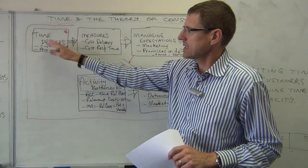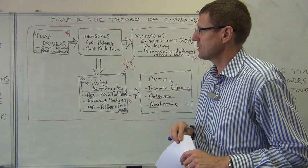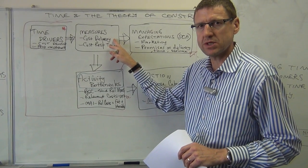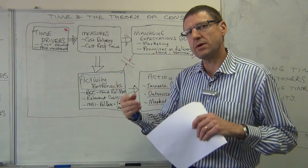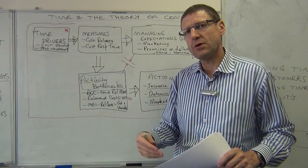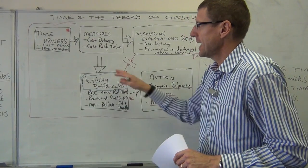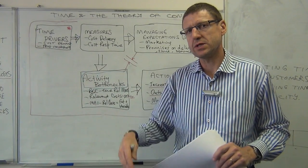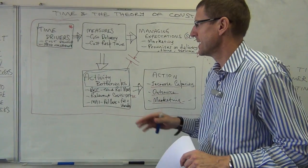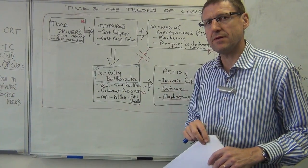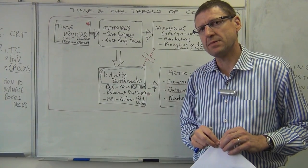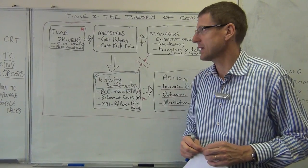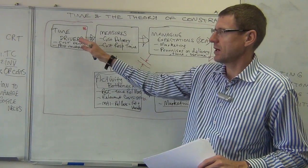Once we understand the time drivers, we want to try and measure how we are going. So we have measures of customer delivery: what percentage of orders are we actually delivering on time. And customer response time, which is the time that customer initiates an order to the time the customer receives the order. So these are definitely important measures that all companies need to have in their organization to get feedback on how they're going on their time-based competition.